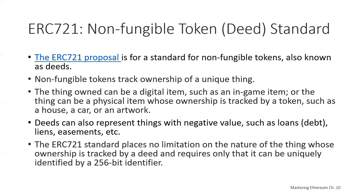ERC-777 and ERC-223 were really attempts to modify ERC-20 and give it greater capabilities. Let's take a look at what is probably the second most popular ERC after ERC-20, which is ERC-721, the non-fungible token standard, sometimes called the DEED standard. ERC-721 is a standard for non-fungible tokens, sometimes referred to as DEEDs, tracking ownership of a unique thing. This is very different from ERC-20, which didn't track the provenance of a specific item.